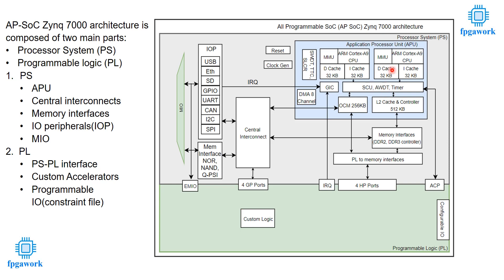We also have a timer and watchdog timer. The watchdog timer is used to reset the system if there is a problem. The timer can be used as a counter or as a timer. We also have an L2 cache, which also regulates address translation between L1 and L2. The L2 controller sends data and addresses to memory interfaces, which connect to external DDR RAM — for example, on that board the DDR RAM size is 512 megabytes.